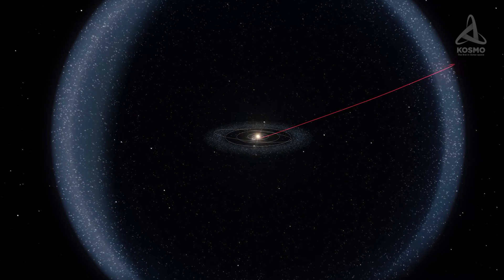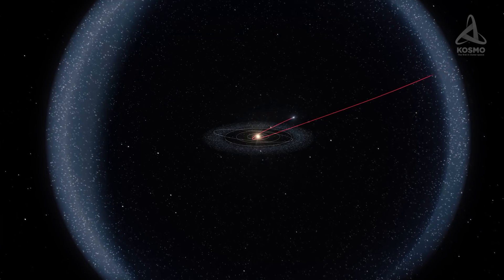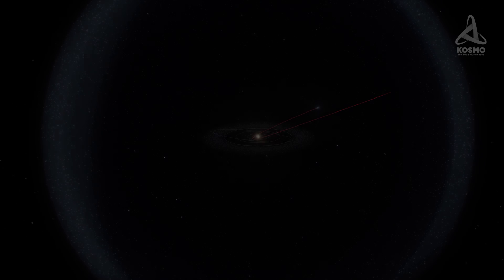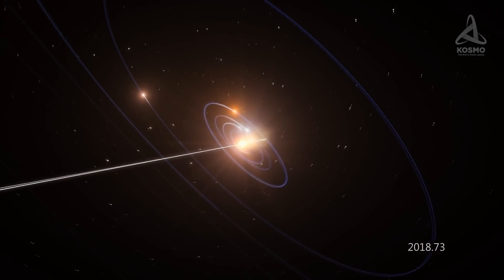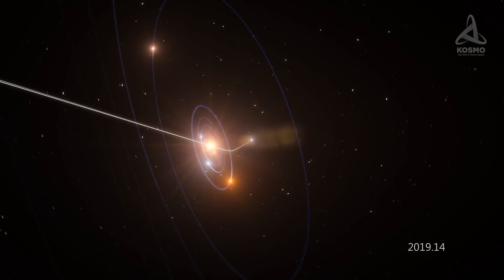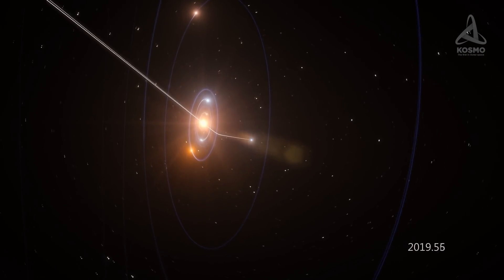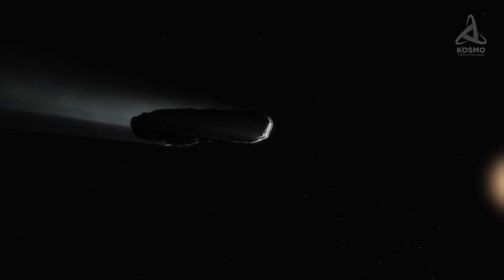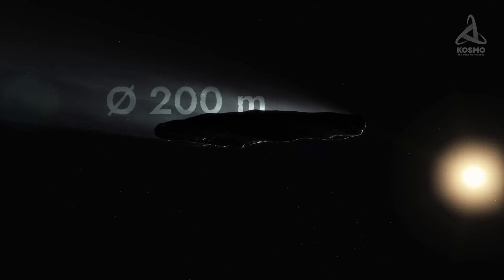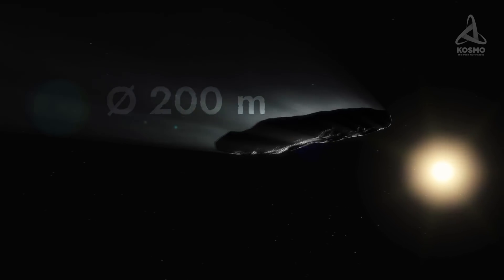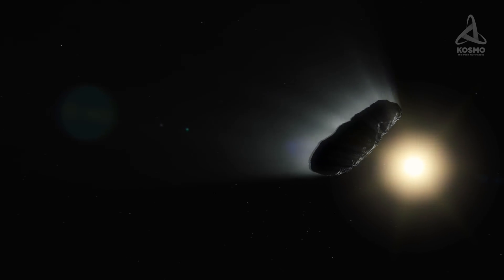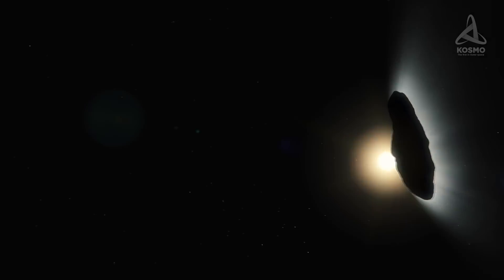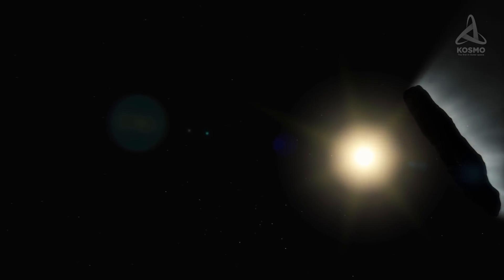Scientists cannot say how long Oumuamua may have been racing through interstellar space. And for all we know, the solar system may be the first planetary system the asteroid has visited after its ejection from the parent system. The object is posited to consist predominantly of rock, and its diameter is estimated at approximately 200 meters. Being cigar-shaped, the asteroid may rightfully be called one of the most elongated objects on the solar system.